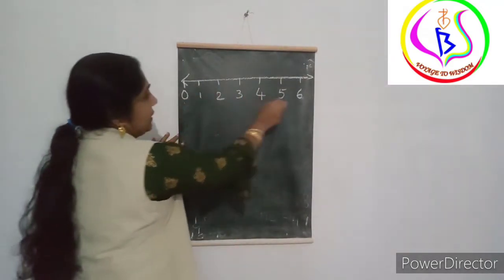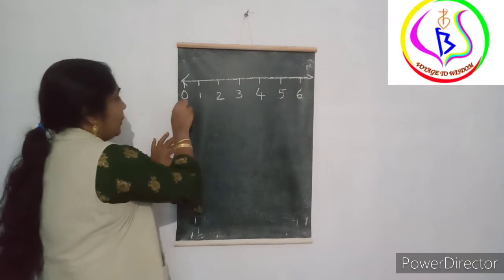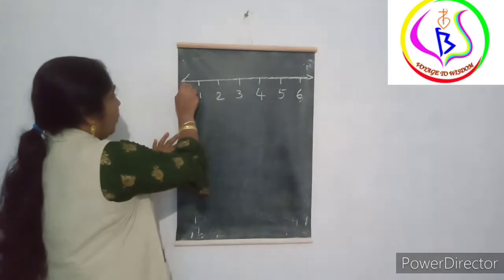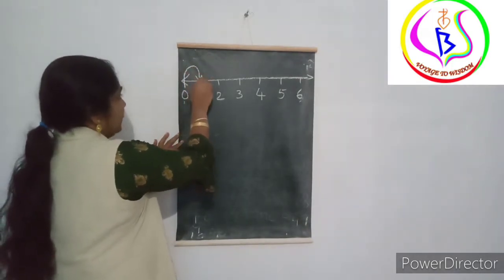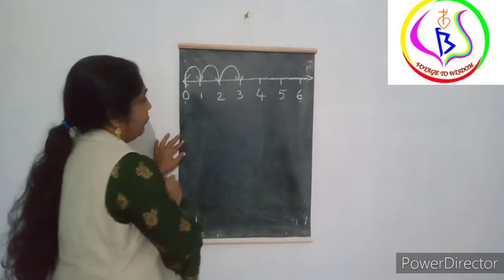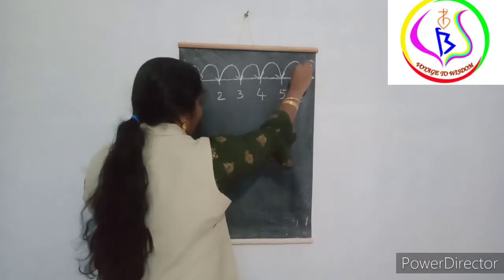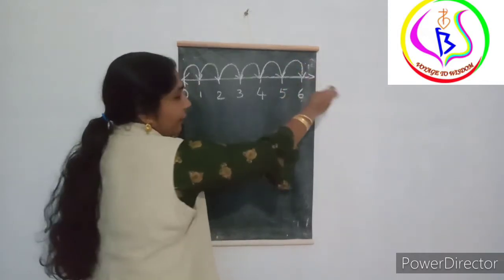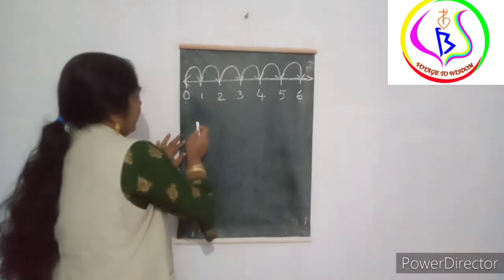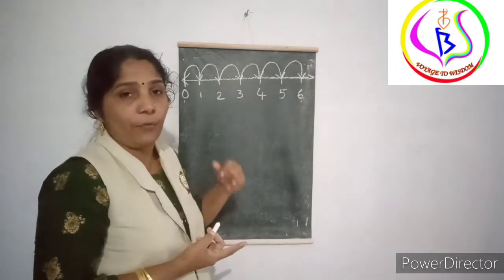Look children, this is a number line from 0 to 6. We start the number line from 0. From 0 we jump to 1, then from 1 to 2, from 2 to 3, from 3 to 4, 4 to 5, 5 to 6, from 6 to 7, from 7 to 8, from 8 to 9. This is the increasing order of numbers.